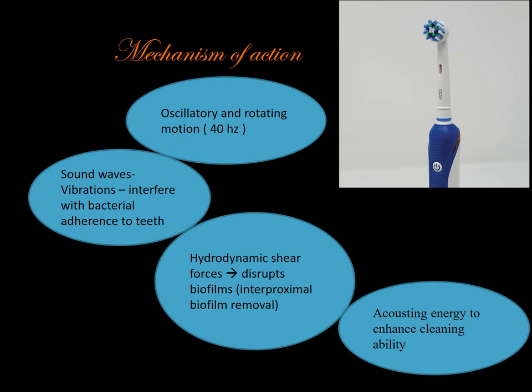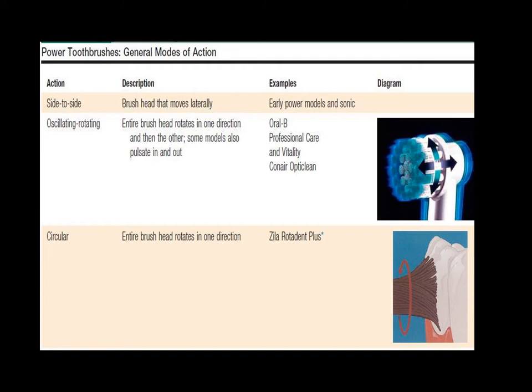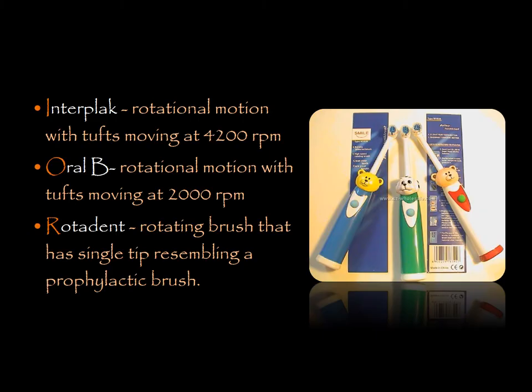Power toothbrushes are available with different motions. Some examples available in the market include Oral-B Professional Care with circular motion, and several other brands. Many power toothbrushes are available.